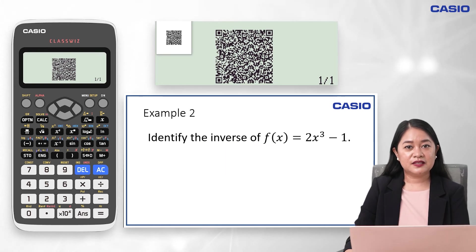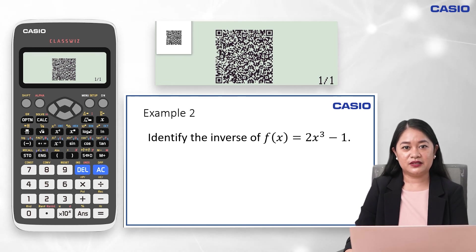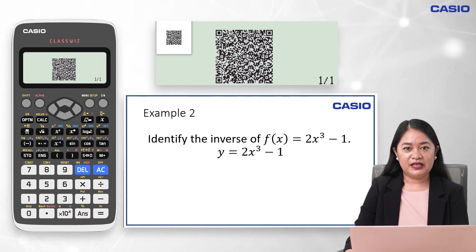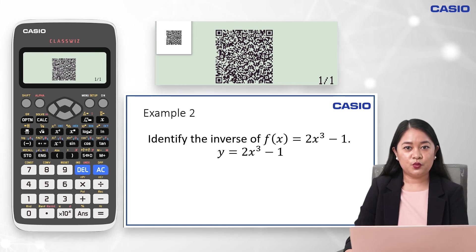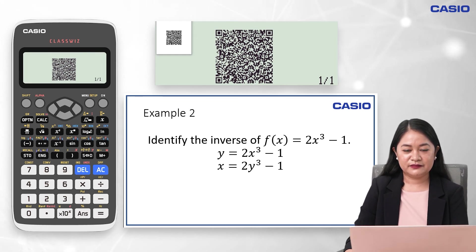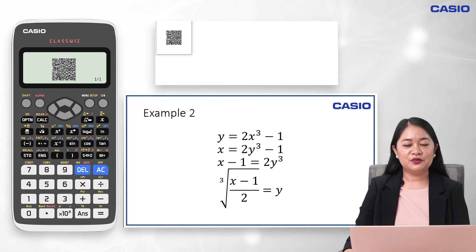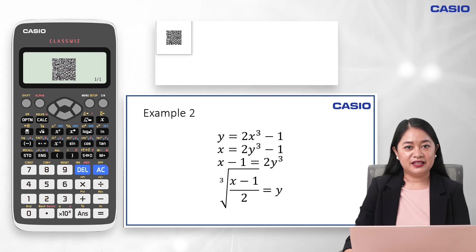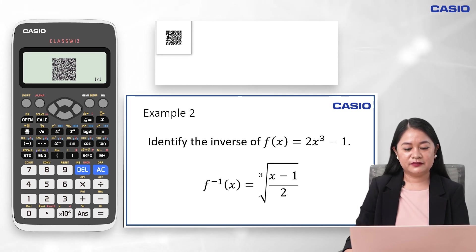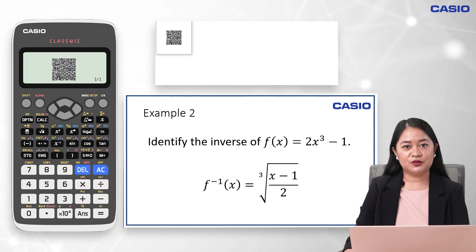Still given the function f(x) = 2x³ − 1, let us identify its inverse. First, replace f(x) by y. Then interchange y and x. Next, derive an equation in terms of y: add 1 to both sides of the equation, then divide the equation by 2, and finally get the cube root of the equation. So the inverse function, denoted by f⁻¹(x), is the cube root of the quantity (x + 1) over 2.